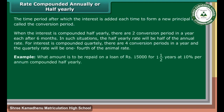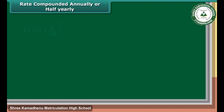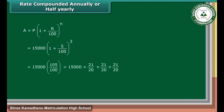Example: What amount is to be repaid on a loan of Rs. 15,000 in 1 and a half years at 10% per annum compounded half yearly? Solution: There are 3 half years in 1 and a half years. Compounding has to be done 3 times. Rate of interest is equal to half of 10%, which is equal to 5% half yearly. A is equal to P into (1 plus R upon 100) raised to the power N, which is equal to 15,000 into (1 plus 5 upon 100) raised to the power 3, which is equal to 15,000 into (21 upon 20) into (21 upon 20) into (21 upon 20), which is equal to Rs. 17,364.37.